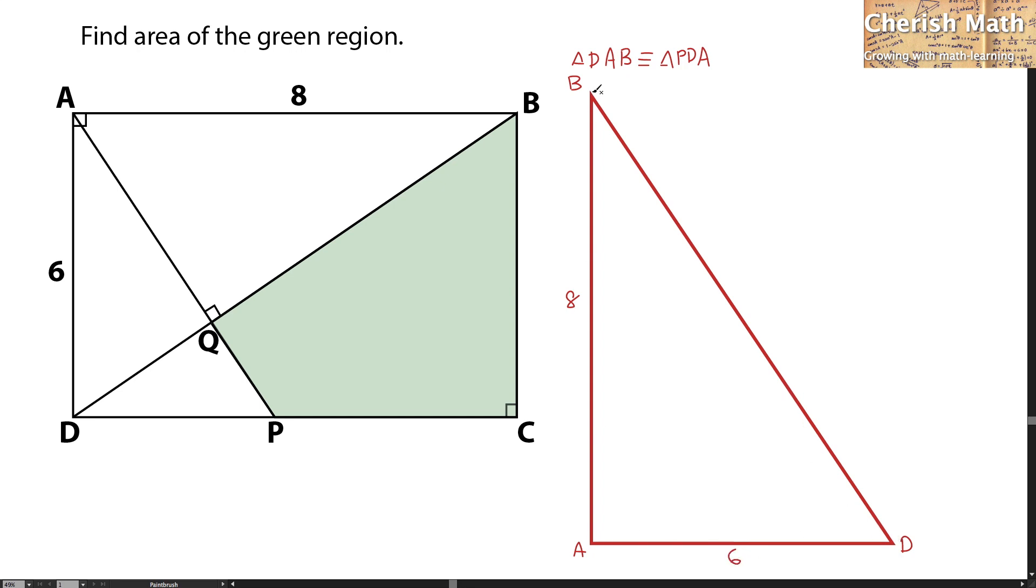By looking at triangle DAB and triangle PDA, those two triangles are similar to each other. The sides that are similar are AB with DA. I'm going to use 8 over 6 as the scale factor for the length. The same concept applies with AD, which is 6, divided by DP. The value of DP that I'm getting is 4.5.